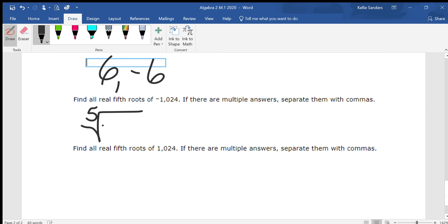The fifth root of negative 1024. I already did that one a while ago. It is negative 4. If this is odd, you're only going to get one answer. On this one it was even, so we're going to get two answers.